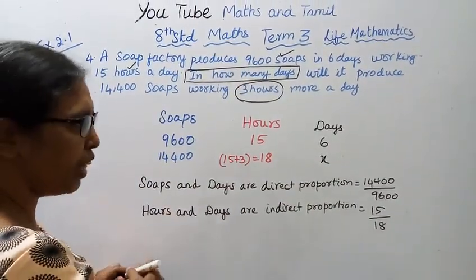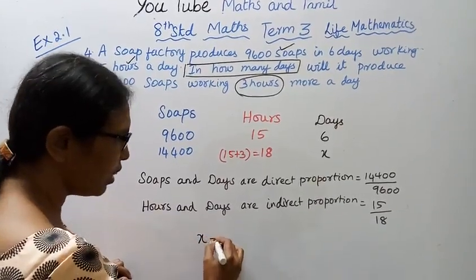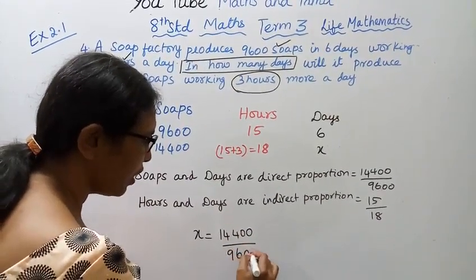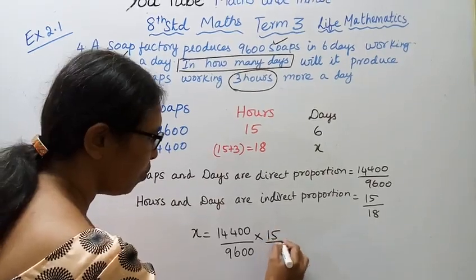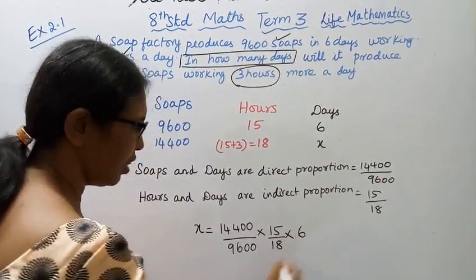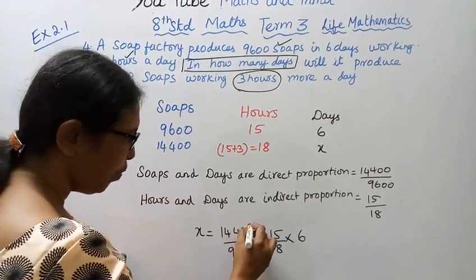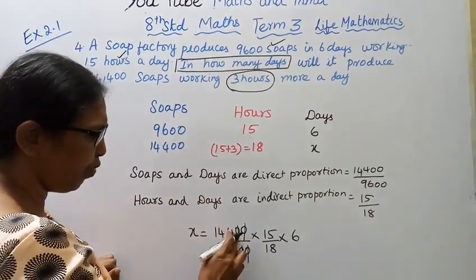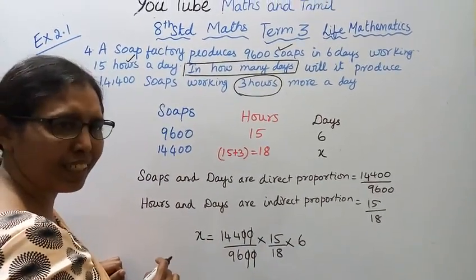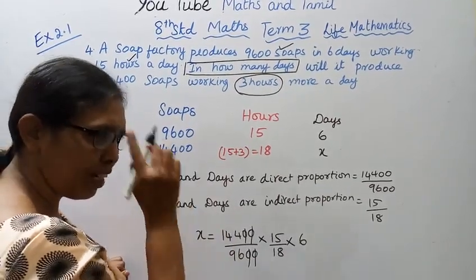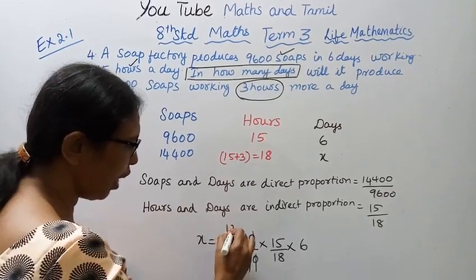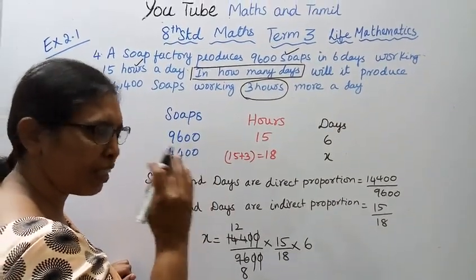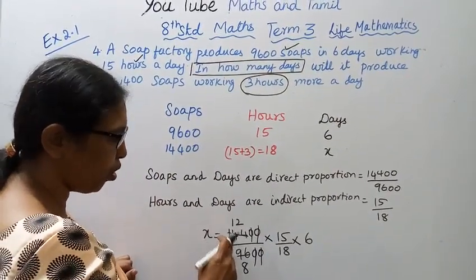x equals 14400 by 9600, into 15 by 18, into 6. We can cancel: the hundreds and zeros cancel. 144 and 96 both divide by 12. From the 12 tables, 12 times 12 is 144, 12 times 8 is 96.